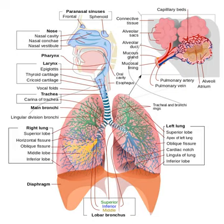Bronchioles are defined as the small airways lacking any cartilaginous support. The first bronchi to branch from the trachea are the right and left main bronchi. Second only in diameter to the trachea, 1.8 centimeters, these bronchi, 1 to 1.4 centimeters in diameter, enter the lungs at each hilum, where they branch into narrower secondary bronchi known as lobar bronchi, and these branch into narrower tertiary bronchi known as segmental bronchi. Further divisions of the segmental bronchi, 1 to 6 millimeters in diameter, are known as 4th order, 5th order, and 6th order segmental bronchi, or grouped together as subsegmental bronchi.